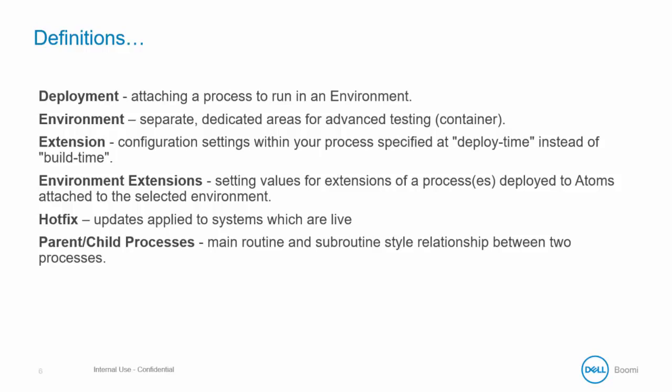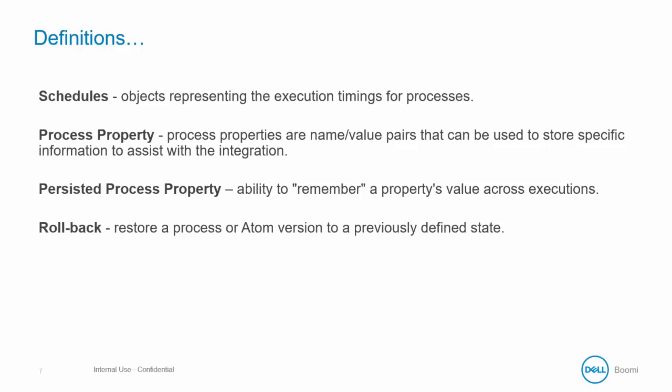The environment extension is the setting value for those extensions set at the environment level, which makes those values available to multiple processes deployed to that environment. A hotfix is an update applied to systems which are live and running in production rather than in development. A parent and child process defines a relationship between a master process and a sub-process. Schedules are applied to a deployed process dictating when the process should be executed. Process properties are name-value pairs that can be used to store specific information to assist with an integration.